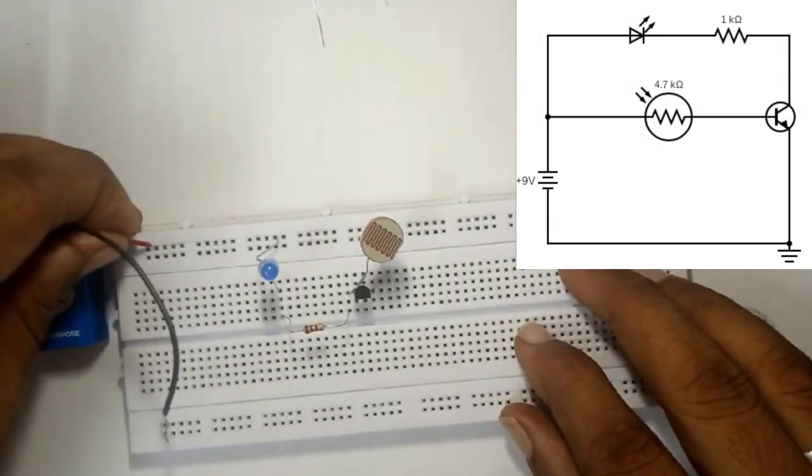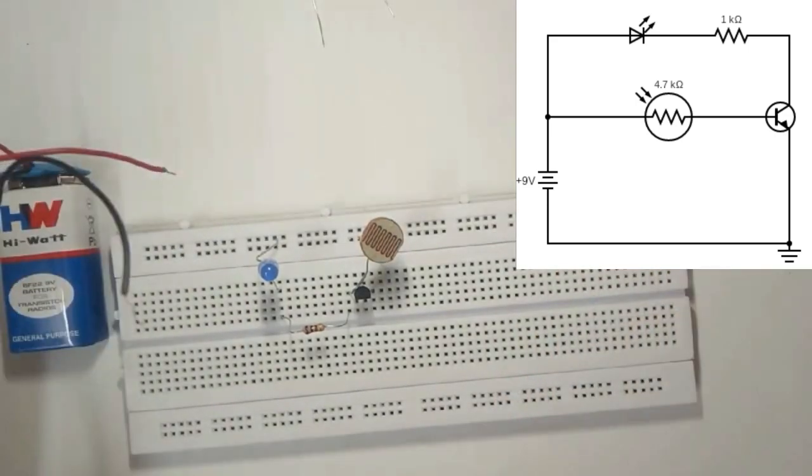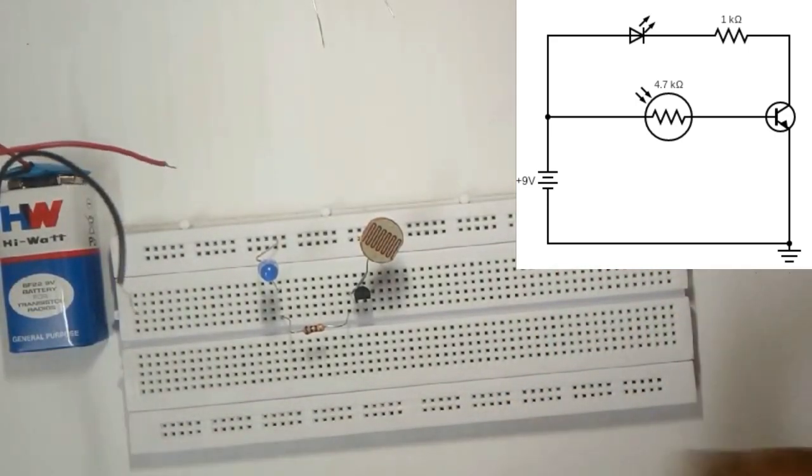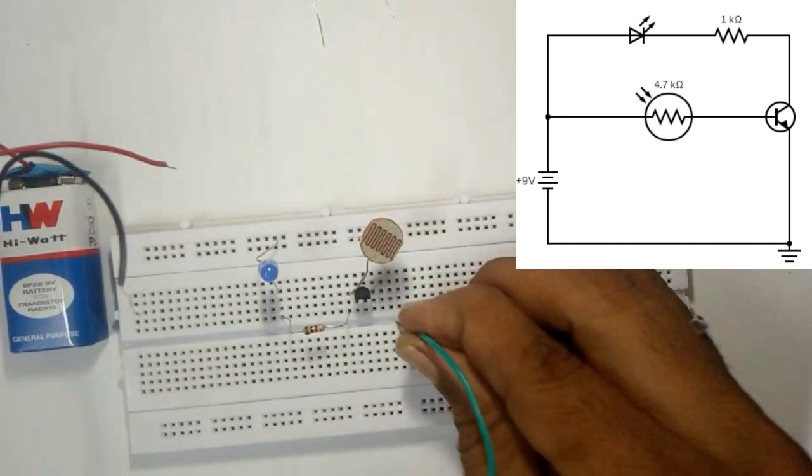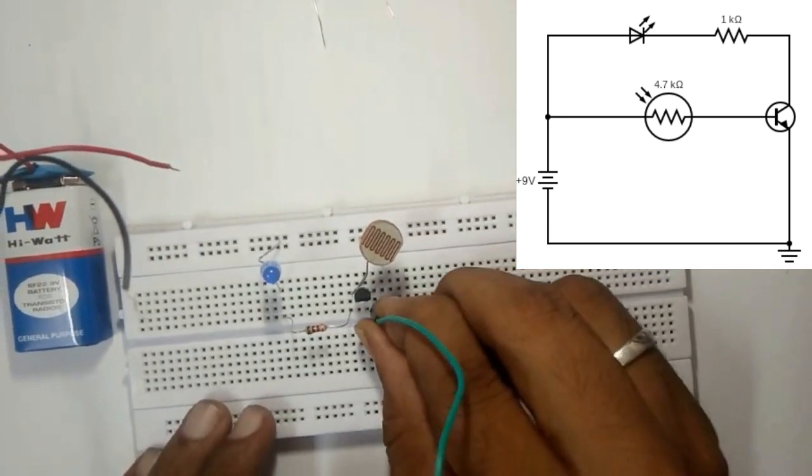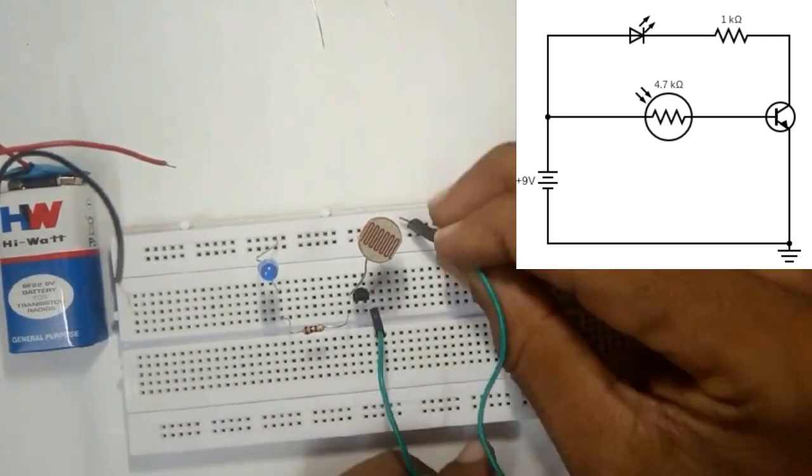So that's it, we are going to give the power supply. Okay, we have not given a ground supply here. Okay, so emitter is ground and I'm going to take it like this, then give my ground here.